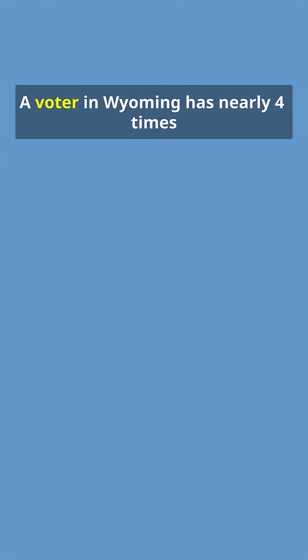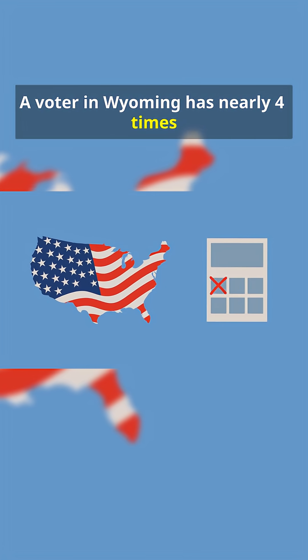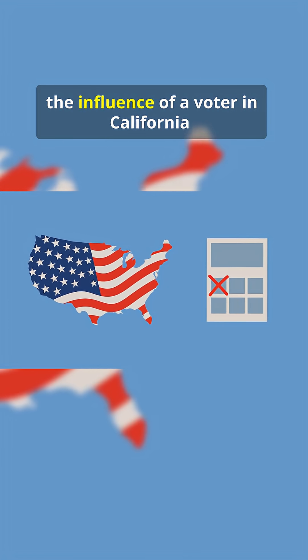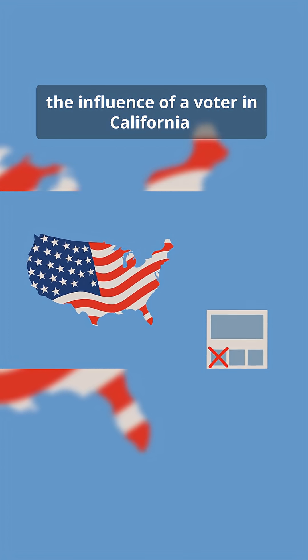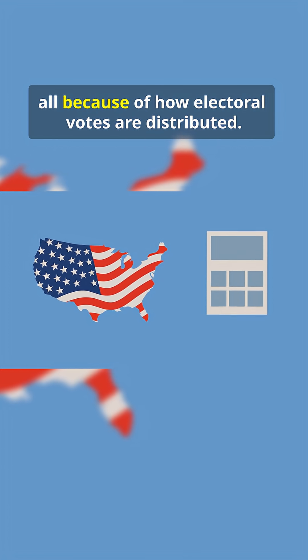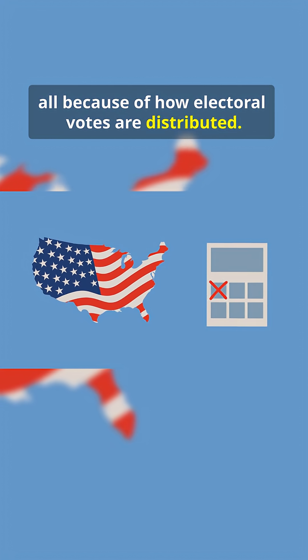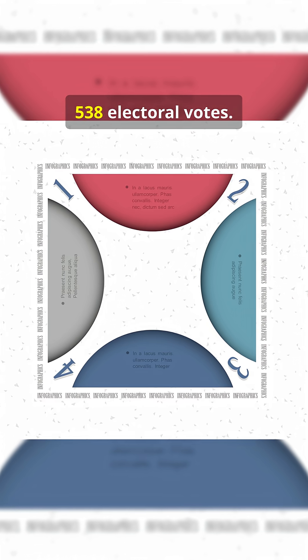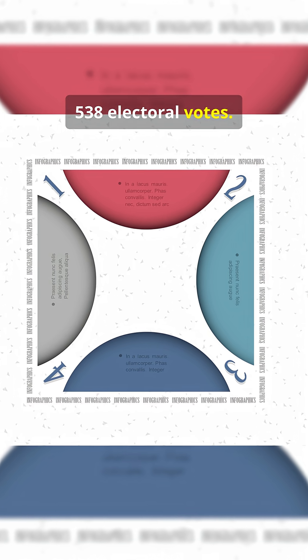A voter in Wyoming has nearly four times the influence of a voter in California, all because of how electoral votes are distributed. There are 538 electoral votes total.